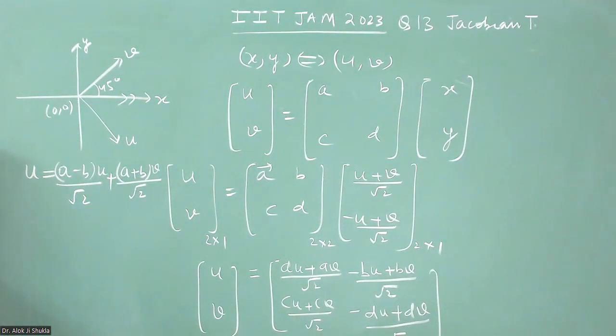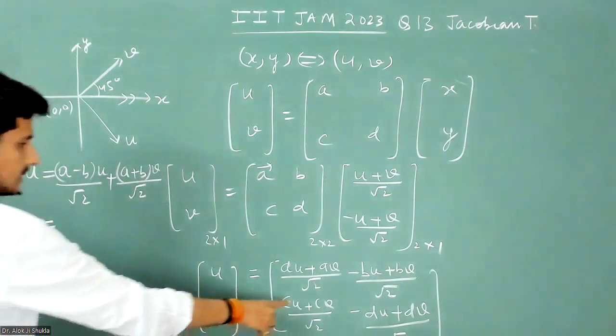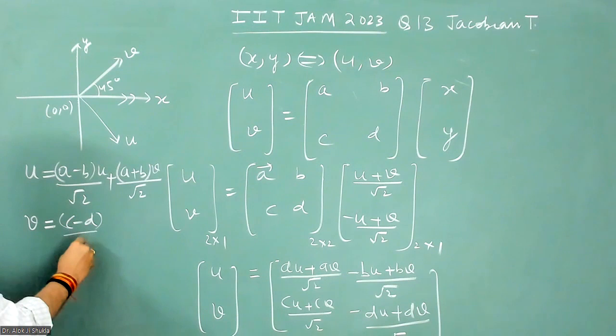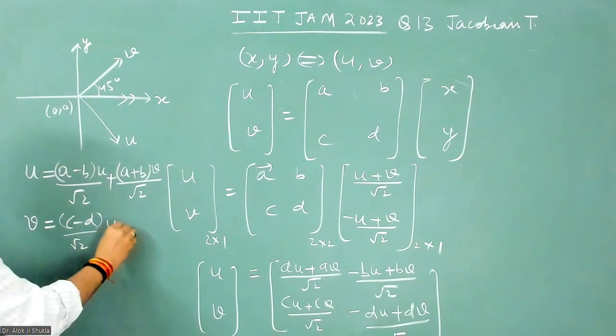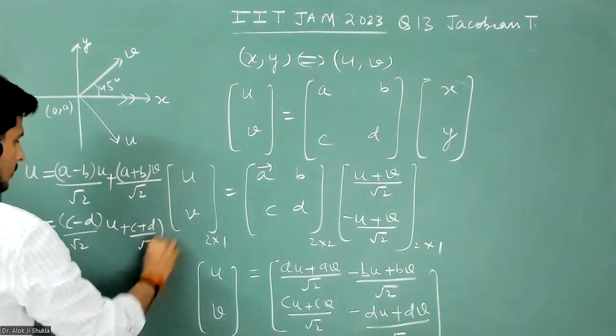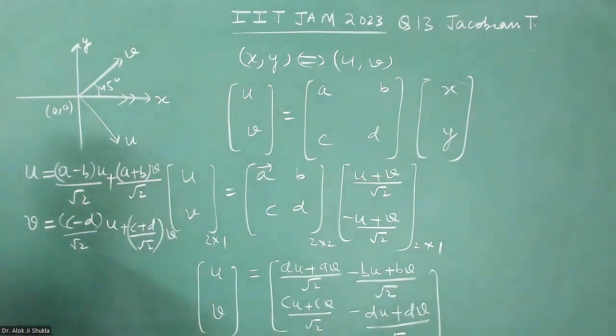And what you get as v is: v is c minus d by root two u, and plus c plus d by root two v.